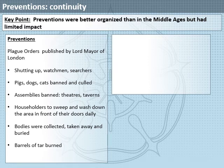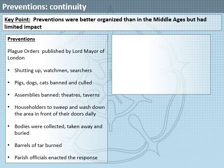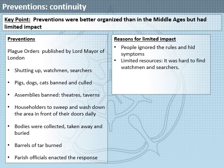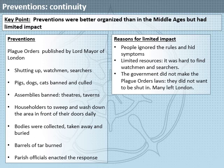The authorities also arranged for barrels of tar to be burned to try to stave away the miasma, and it was local officials in parishes that were ordered to carry out these actions. The reasons for the limited impact were that some people ignored the rules and hid their symptoms, resources were limited making it hard to find watchmen and searchers, the government did not give the Lord Mayor their full backing, and many did not want to be shut in while many in government left.